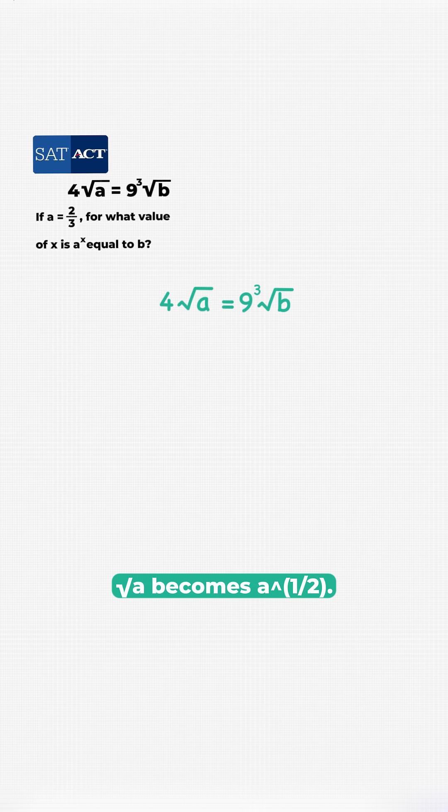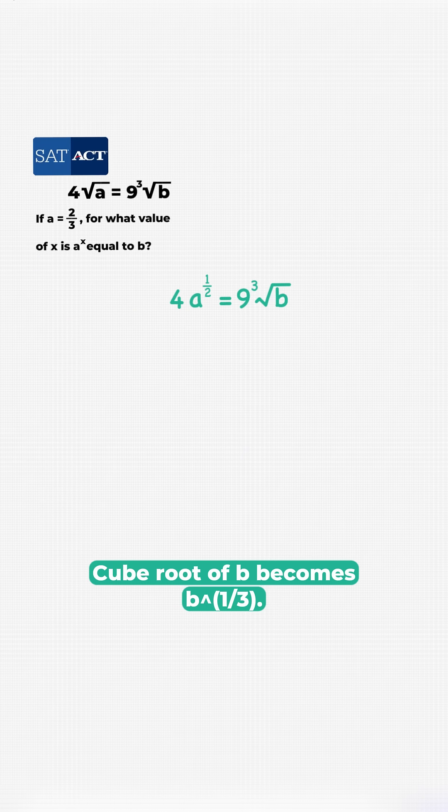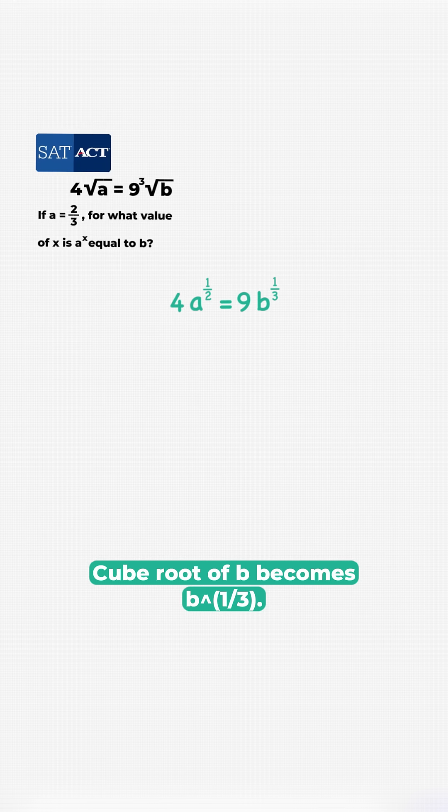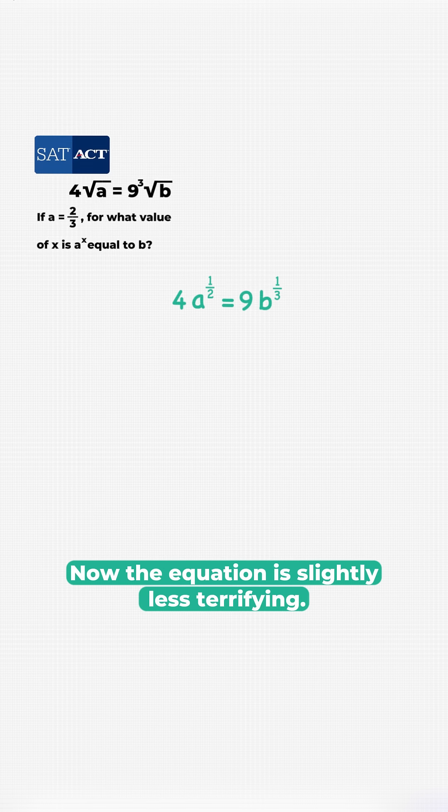Let's convert. Square root of A becomes A to the power of 1 half. Cube root of B becomes B to the power of 1 third. Now the equation is slightly less terrifying.